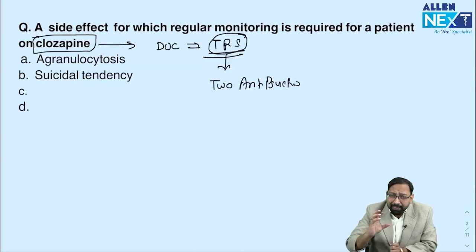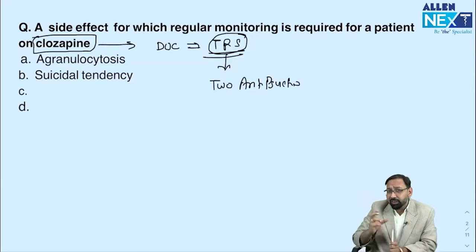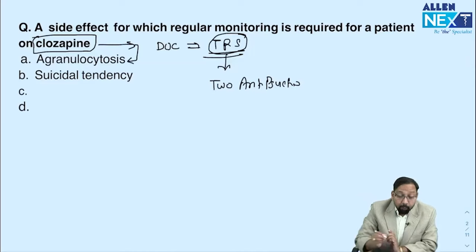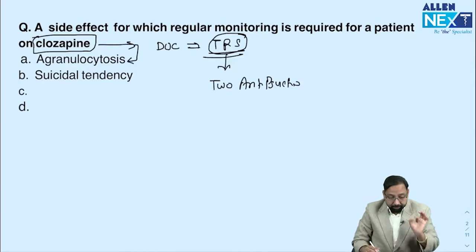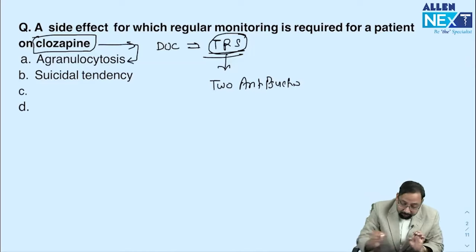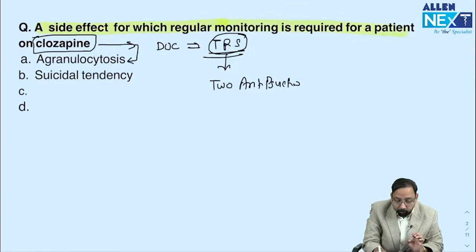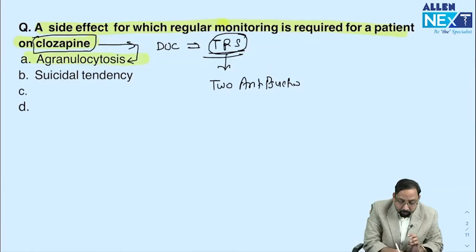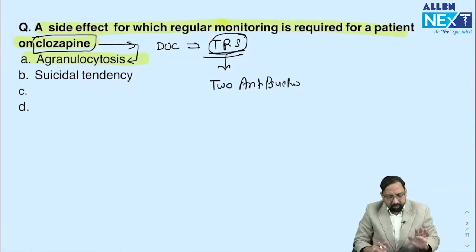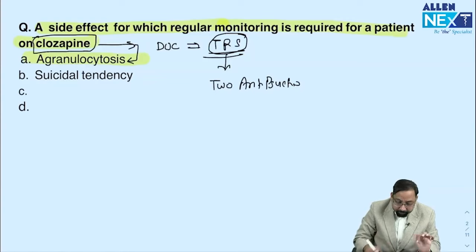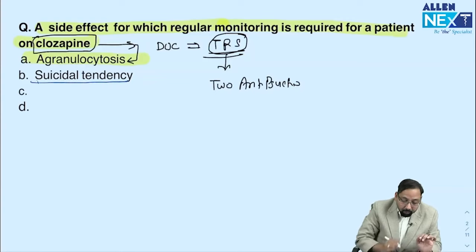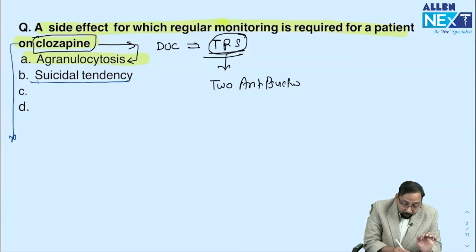One serious side effect of clozapine is agranulocytosis, which requires regular monitoring. The question asked: 'Side effect for which regular monitoring is required in a patient on clozapine?' The answer is agranulocytosis. Note that option B — suicidal tendency — is wrong because clozapine actually has anti-suicidal properties.